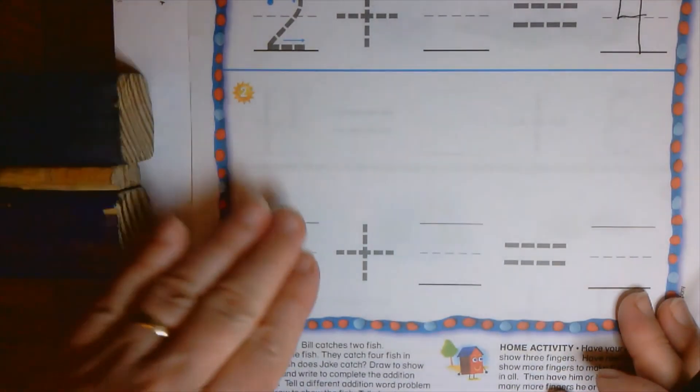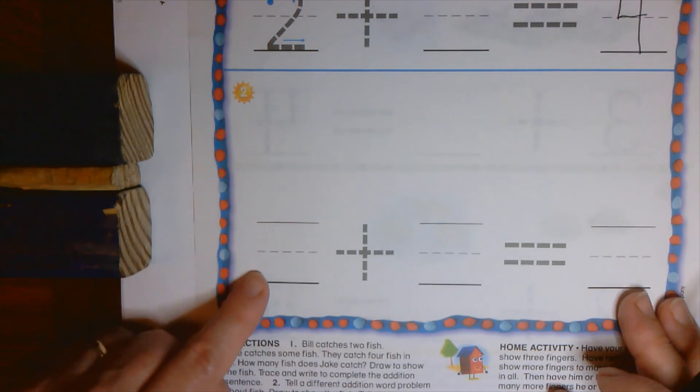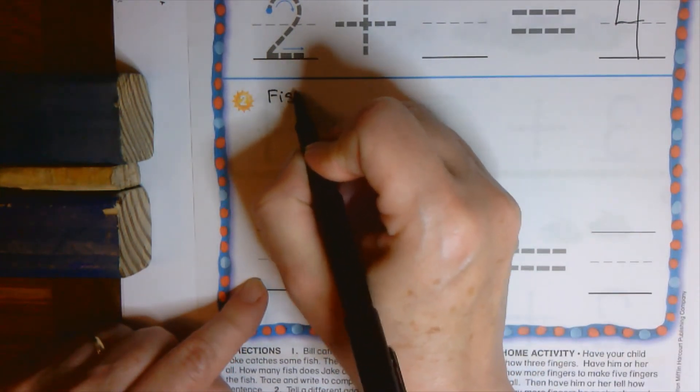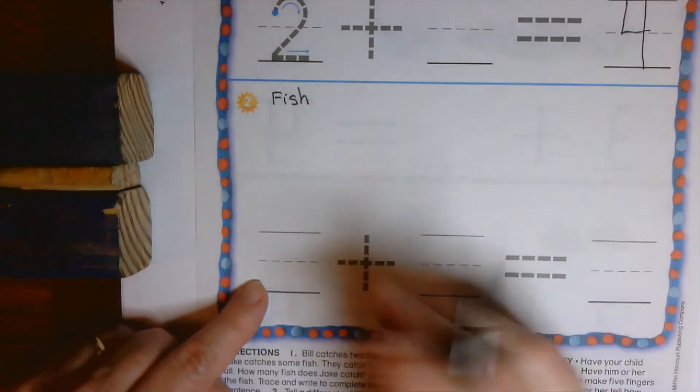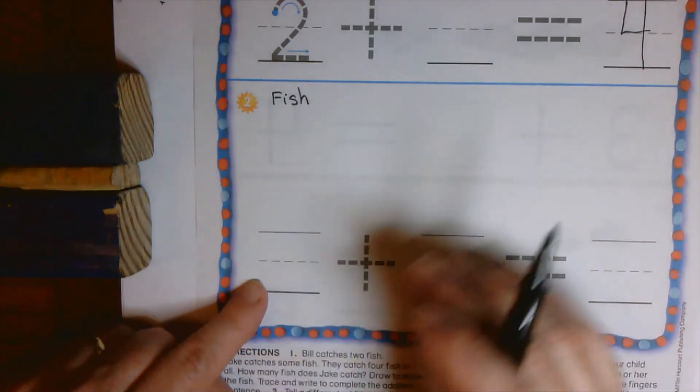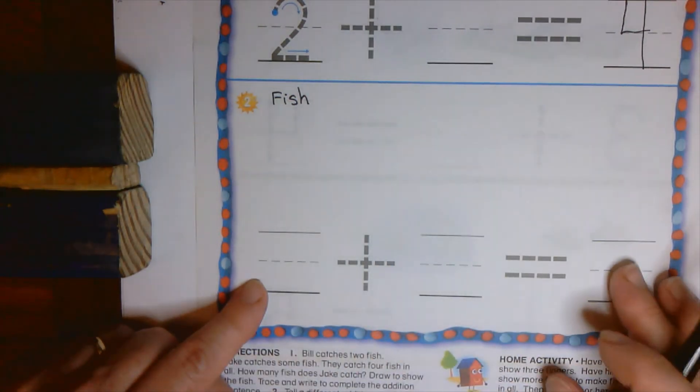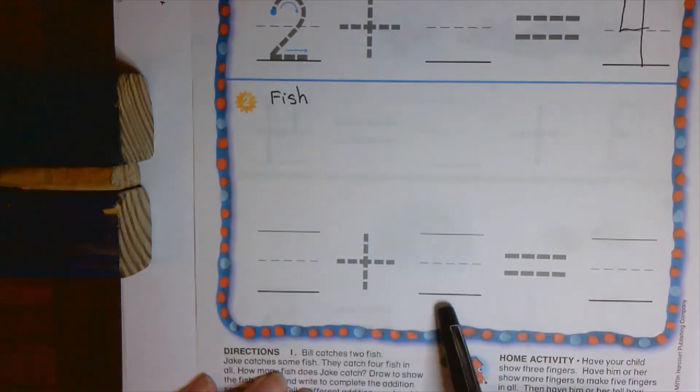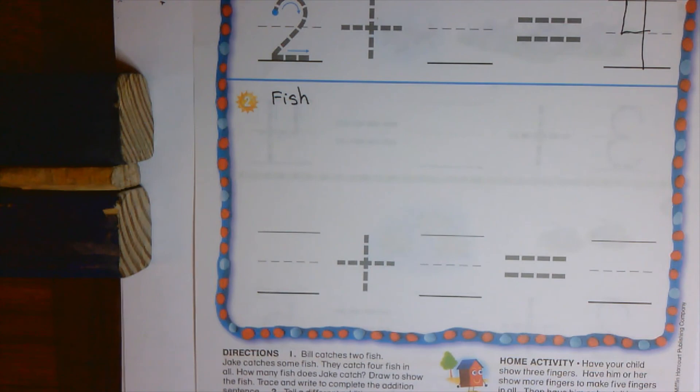Boys and girls, down here, you are going to make up your own fish math story. You're going to have a number of fish that we start out with, a number of fish that get added to it, and then the sum, how many all together. So down here, you guys make up the numbers.